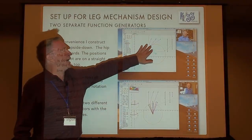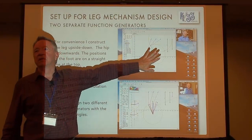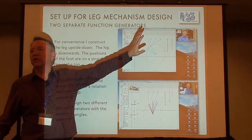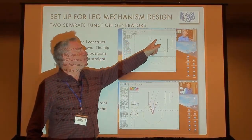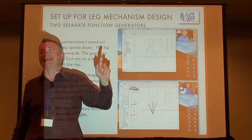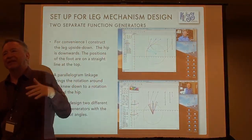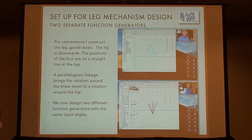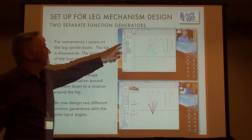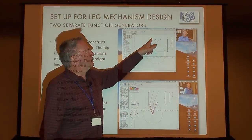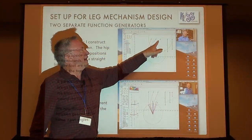How do you design the walking machine? You've got to set it up first. The main thing, if I'm doing three-position synthesis, is that I need three points on a line — because that's really the main characteristic of my foot trajectory.